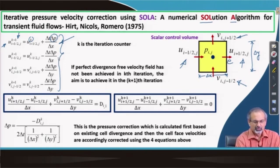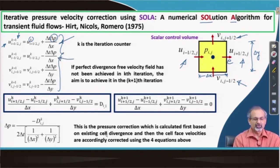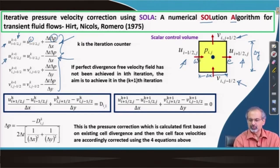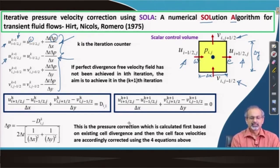Similarly, u at i−1/2, j would be calculated based on the kth value minus the Δt·Δp/Δx term. This is how the u's at the east and west faces are updated. We will continue this discussion in our next lecture. Thank you.